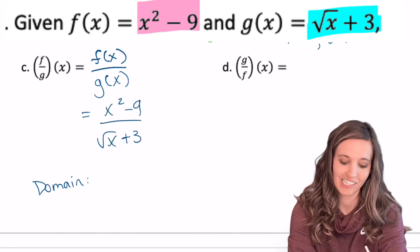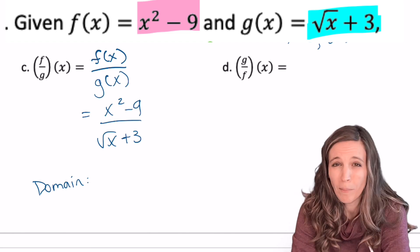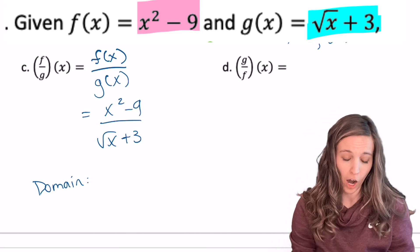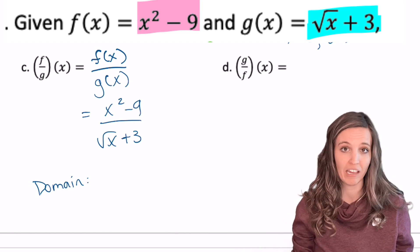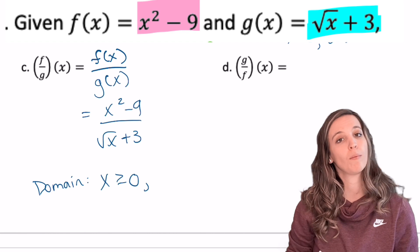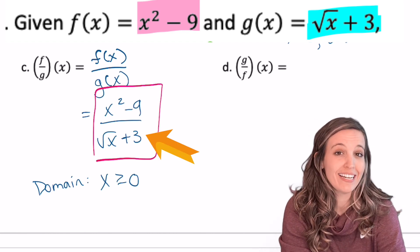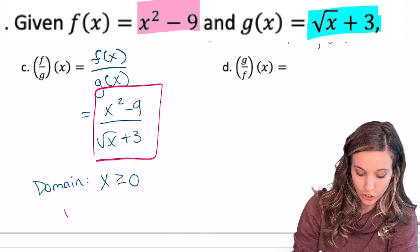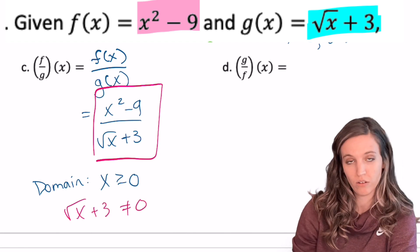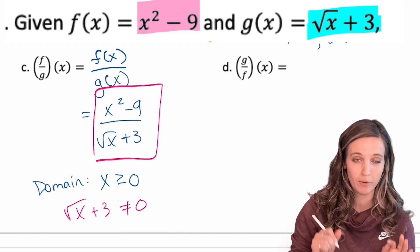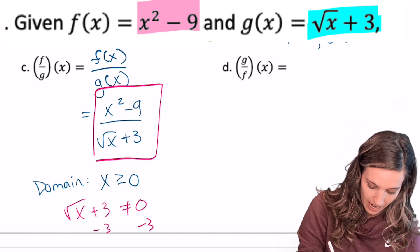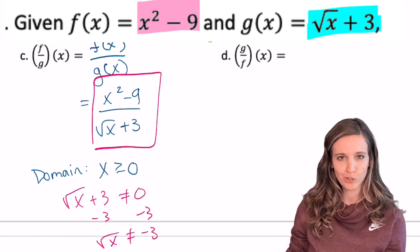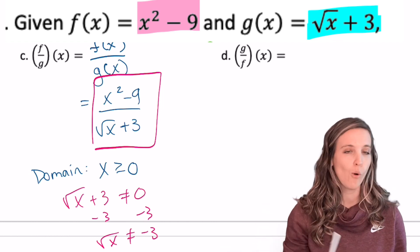For part c, f divided by g of x is x squared minus 9 divided by square root of x plus 3. The domain starts as x greater than or equal to zero. Because there's a denominator, thou shalt not divide by zero — I check whether square root of x plus 3 can equal zero. Subtracting 3, square root of x would need to equal negative 3, but square roots are always positive, so no added restriction.